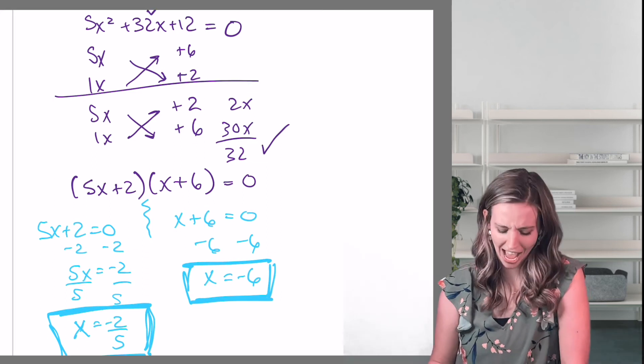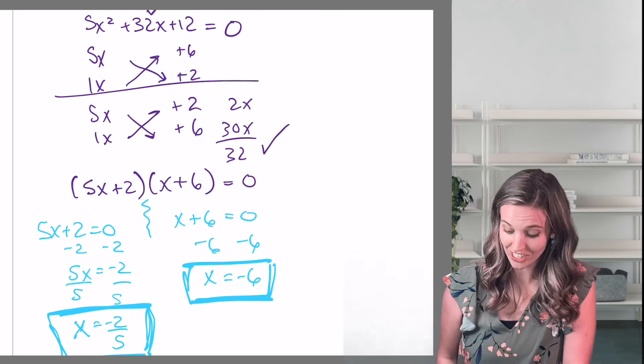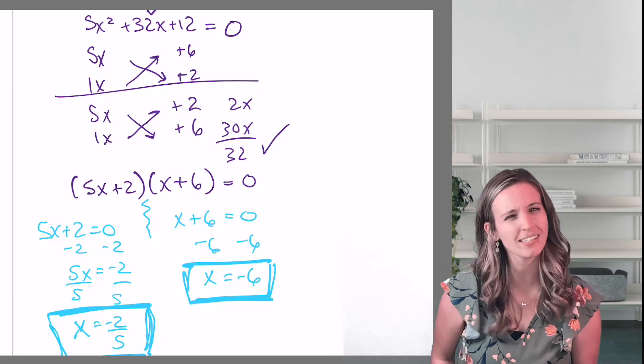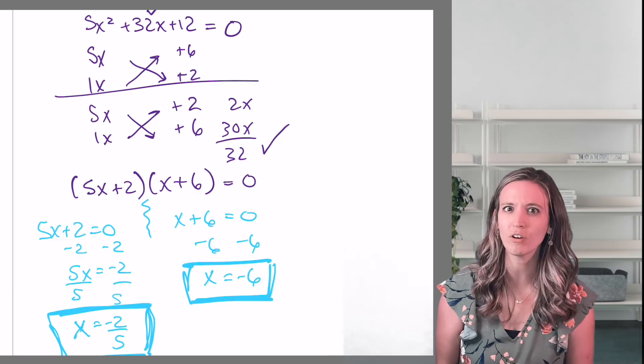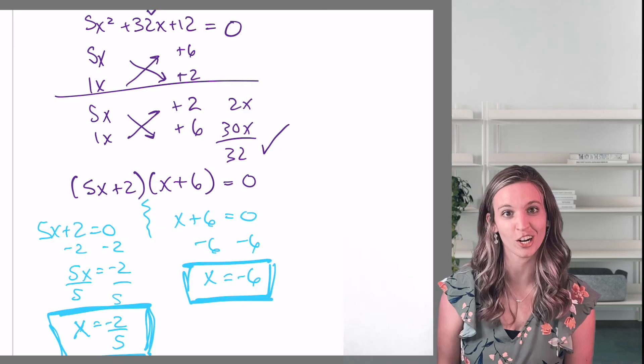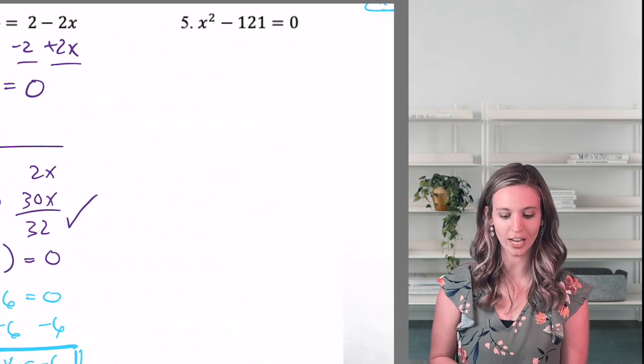All right, let's check it out. I got X equals negative two fifths and X equals negative six. X equals negative two fifths. Let's think about this graphically. That would have been an X intercept. That's not an integer. Interesting.